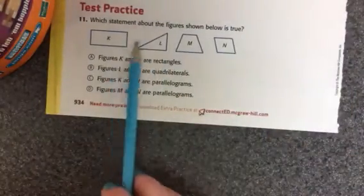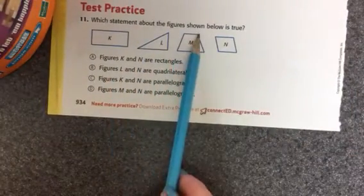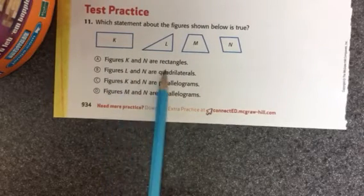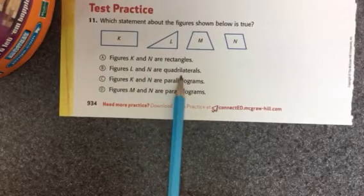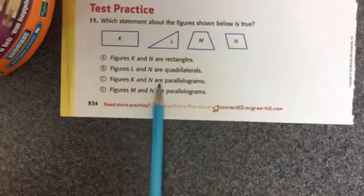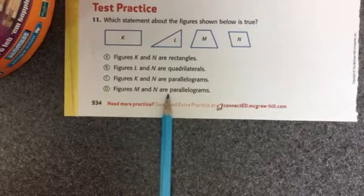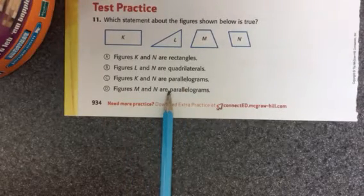Okay, and here's a test practice. Which statement about the figures below is true? A, figure K and N are rectangles. Figures L and N are quadrilaterals. Figures K and N are parallelograms. Figure M and N are parallelograms, so you'll choose the correct one.